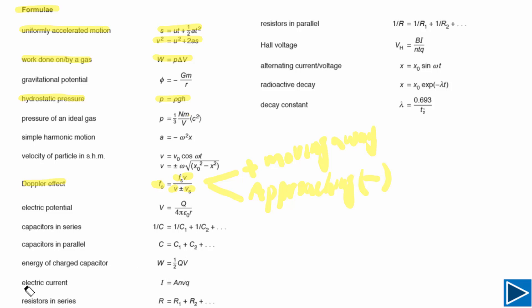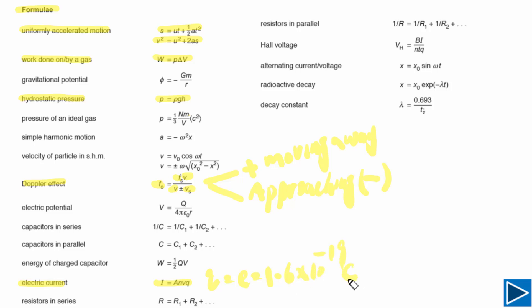Next is the electric current formula: I = nAvQ. Here, A is the cross-sectional area, n is the number density of free electrons (number per unit volume), v is the drift velocity of free electrons, and Q is the charge on a single electron: 1.6 × 10⁻¹⁹ coulombs. Q is constant, and n is constant if the material of the wire is the same.